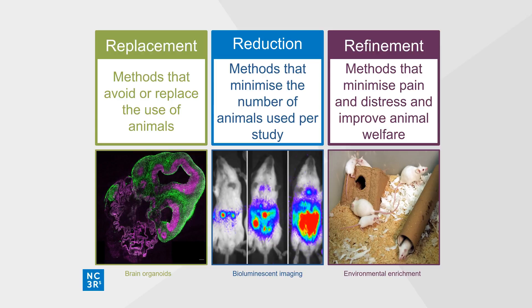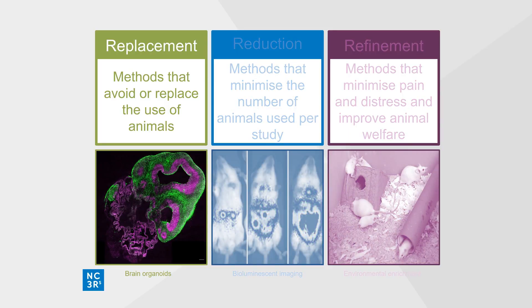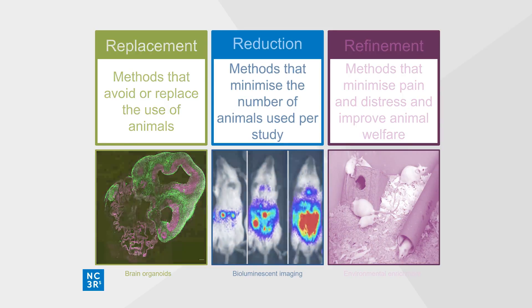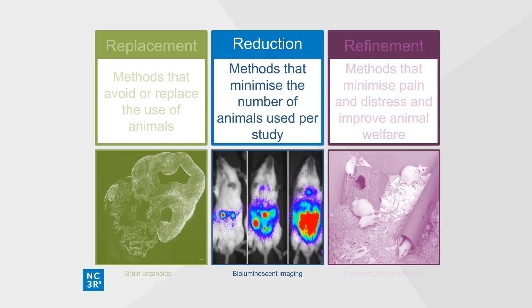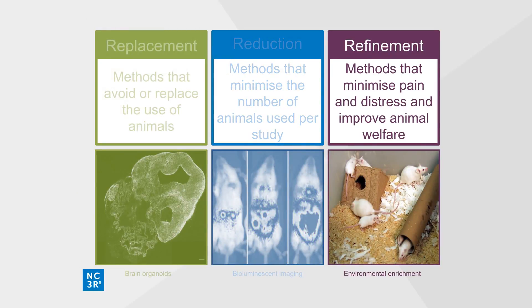The principles of the 3 R's were originally developed as a framework for humane animal research. Replacement refers to methods that avoid or replace the use of animals. Where animals continue to be required, reduction refers to methods that minimise the number of animals used per study while maintaining robust experimental design. Refinement refers to methods that minimise pain, suffering and distress and improve animal welfare.